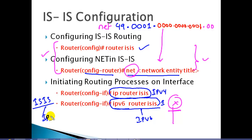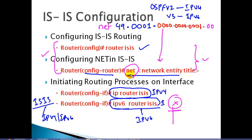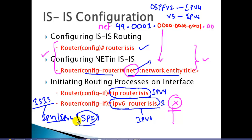IS-IS will be only one process used for both IPv4 and IPv6, unlike OSPF. In OSPF, we have two different versions — OSPFv2 for IPv4 and OSPFv3 for IPv6. In IS-IS, the same NET address and the same IS-IS process is used for both IPv4 and IPv6. The neighbor table, database table, and SPF algorithm are all common for both. If you want, you can change it to separate topologies using multi-topology options, which we'll cover in advanced classes.